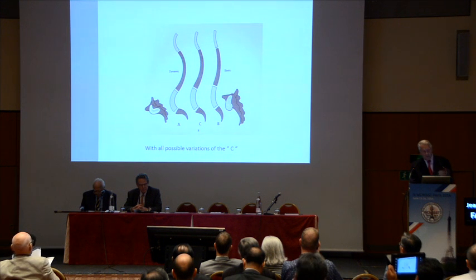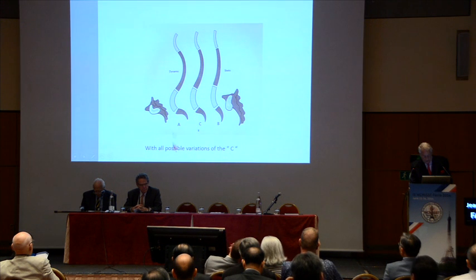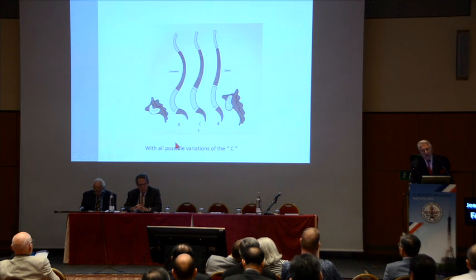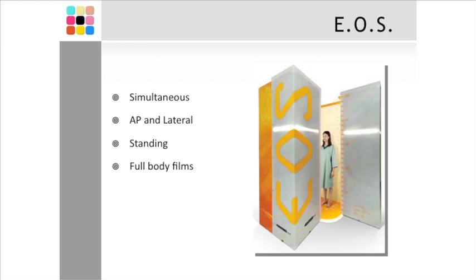And that was pinpointed first by the French, which measures the angle between the sagittal aspect of the end plate of the sacrum and the hip, which was called the angle of incidence.